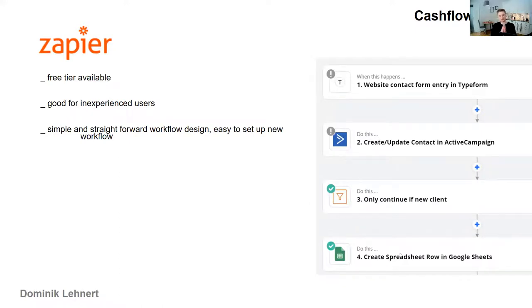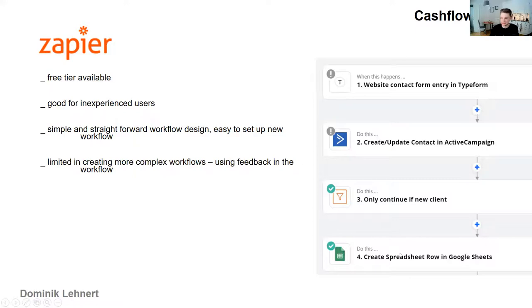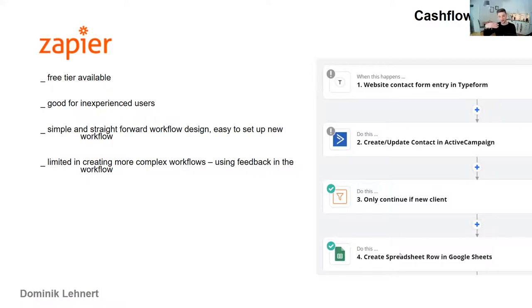Zapier has a very simple and straightforward workflow design — you just click and add steps with a plus button, it's very linear. But that easiness comes with a drawback: a linear design makes it harder to create more complex workflows. For example, if someone signs up on your website and you need to look up information about them in three other places, then do different actions based on which information is found — you can see how that becomes difficult with one block after the next.